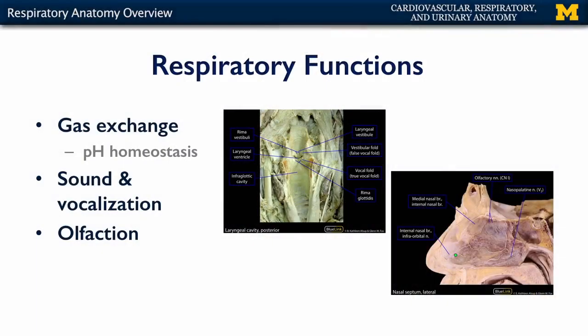The respiratory system is quite streamlined with respect to function. There are three major things it accomplishes for the body. The first is gas exchange. Your body needs oxygen to live and needs to rid itself of carbon dioxide. Oxygen is the terminal proton acceptor in chemiosmosis, the last stage of glucose catabolism, where an individual produces copious amounts of ATP to power all of their endergonic cellular reactions. Carbon dioxide is a byproduct of glucose catabolism and needs to be removed from metabolically active tissues.